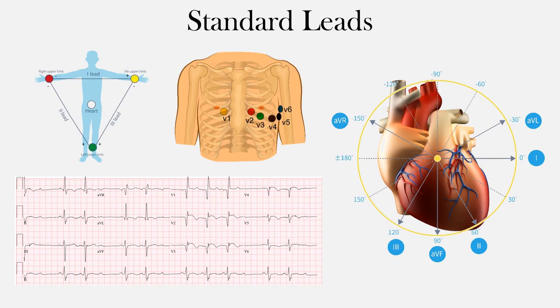In a few of the previous lectures we looked at vectors, electrical axes, as well as electrodes. Now I just want to touch base on the standard 12 leads that we can see on the EKG.